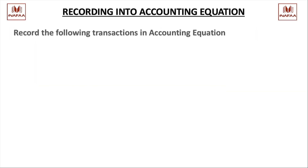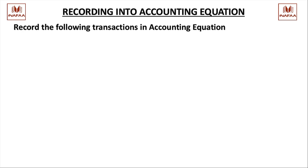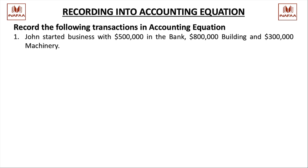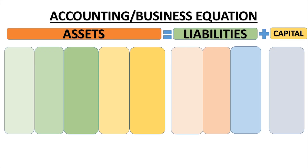Starting from the first transaction: John started business with $500,000 in the bank, $800,000 in building, and $300,000 in machinery — a total investment of $1,600,000. From an accounting perspective, there is an increase in three assets: bank, building, and machinery, as well as an increase in capital. I will record these in the accounting equation.